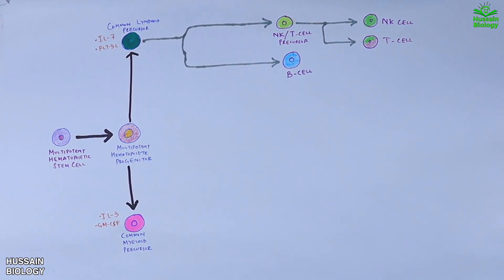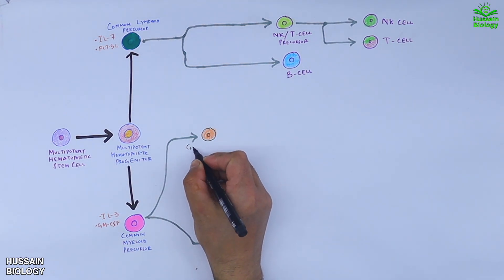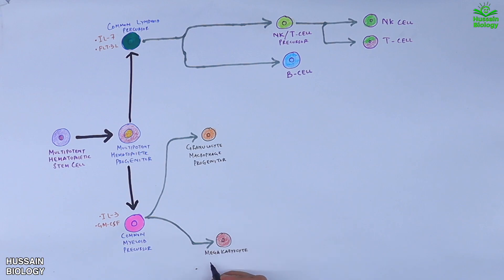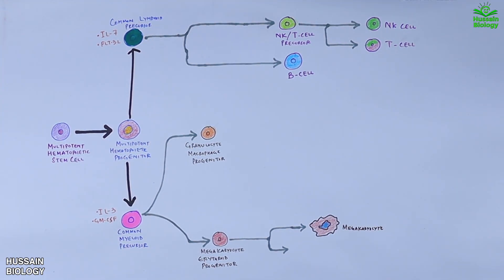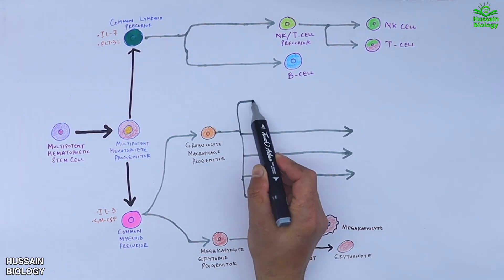Moving to the common myeloid progenitor, it first differentiates into two cells: the granulocyte-macrophage progenitor cell and the megakaryocyte-erythroid progenitor. The megakaryocyte-erythroid progenitor gives us megakaryocytes, as shown in the diagram, and also erythroblasts, which finally differentiate into erythrocytes.